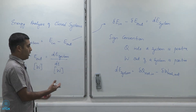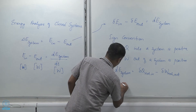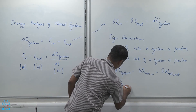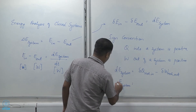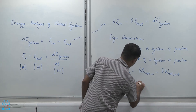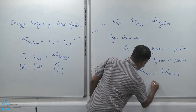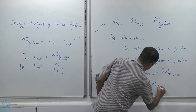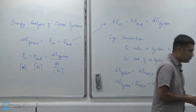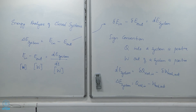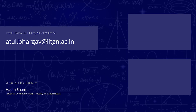This is another way of writing the same thing: delta E_system equals Q_net_in minus W_net_out.